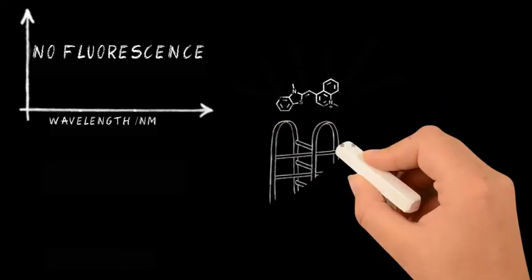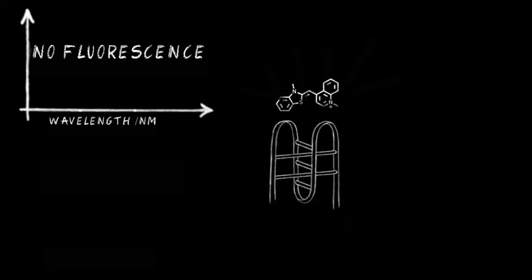If we add DNA, in this case iMotif DNA, the compound then fluoresces and can give out light. And we can measure this fluorescence.